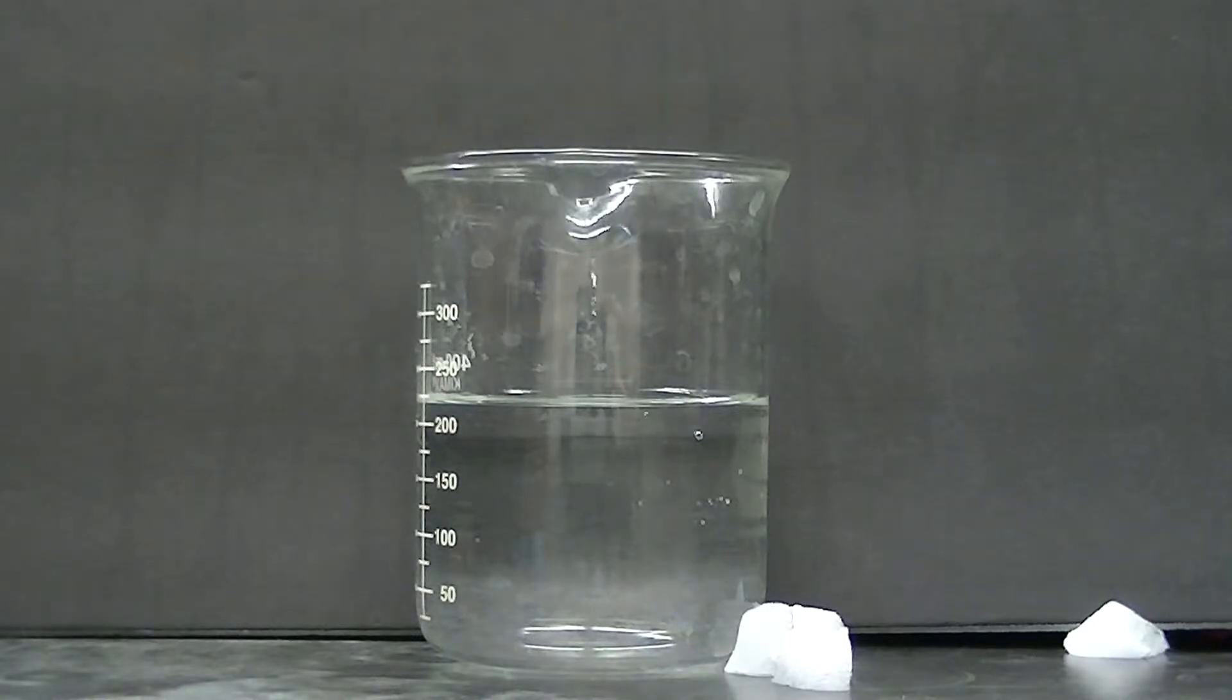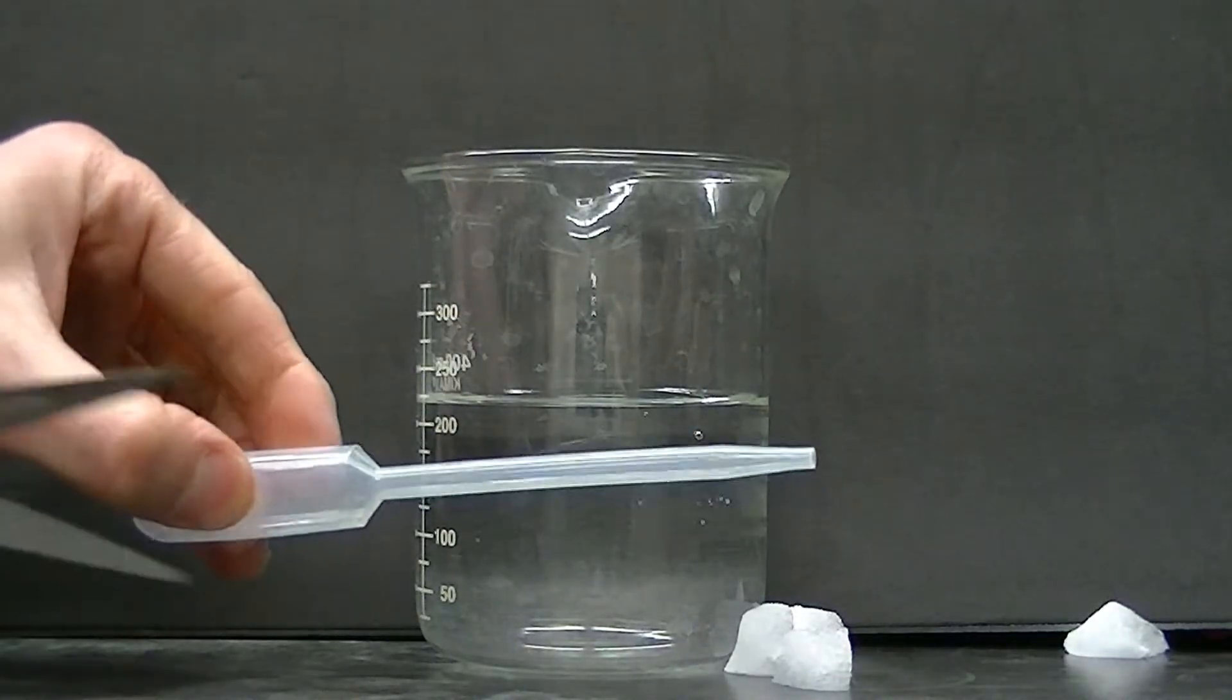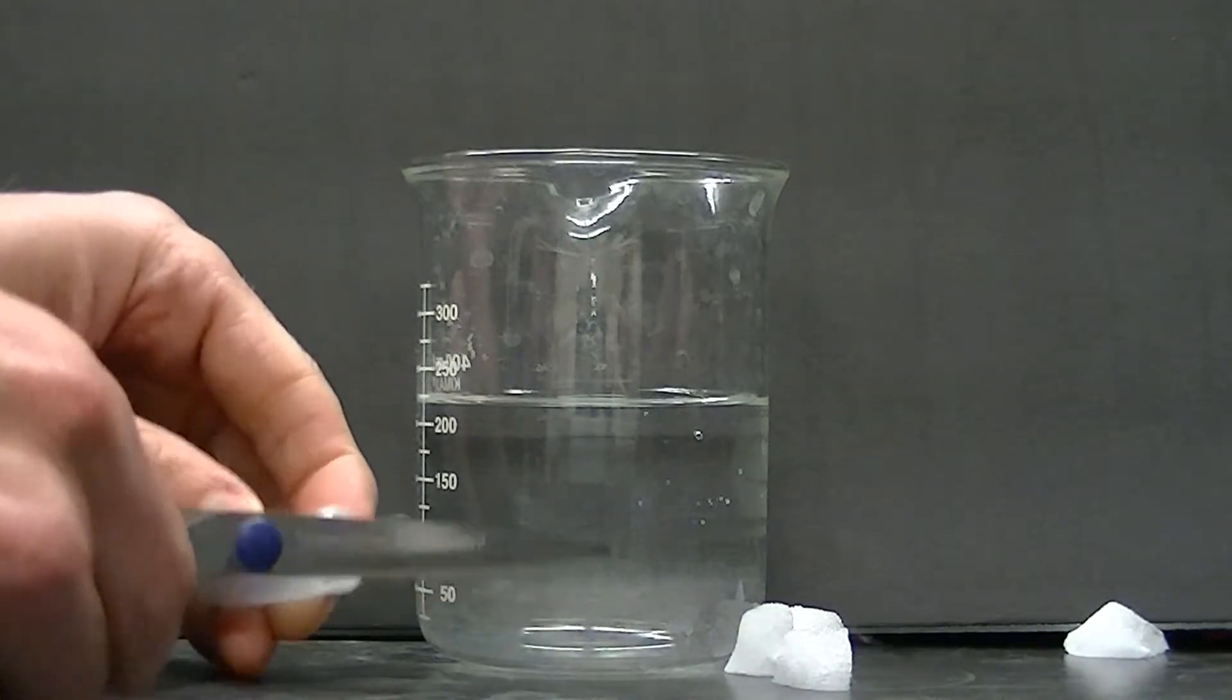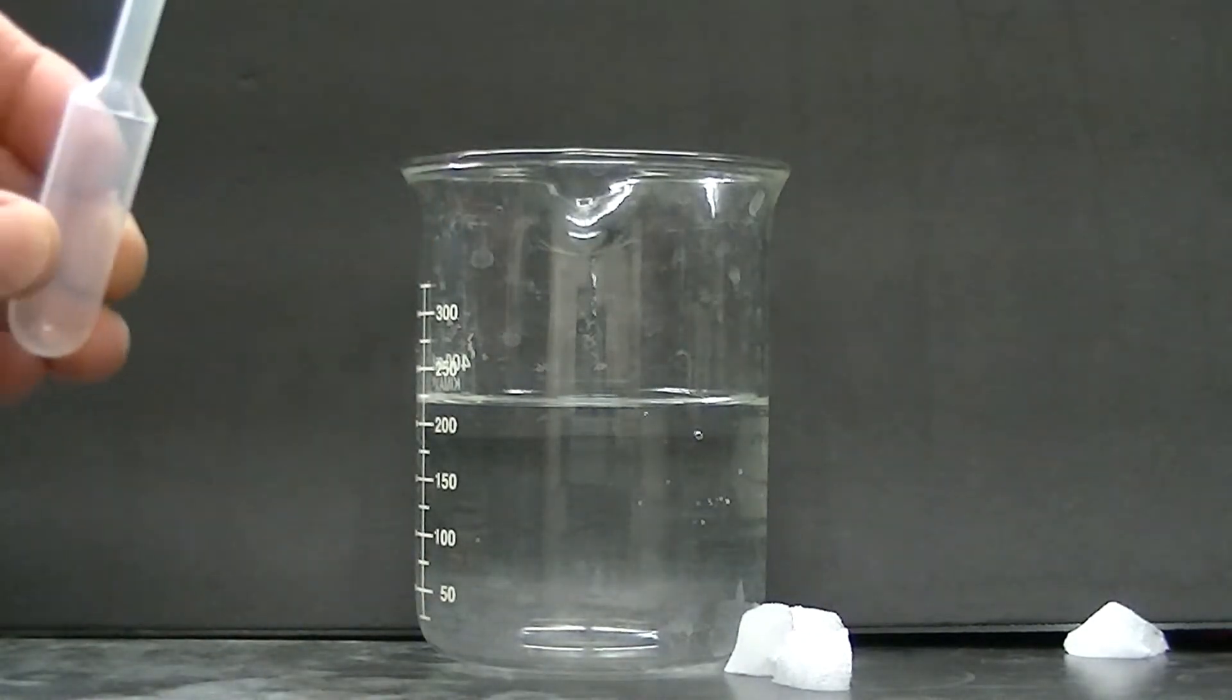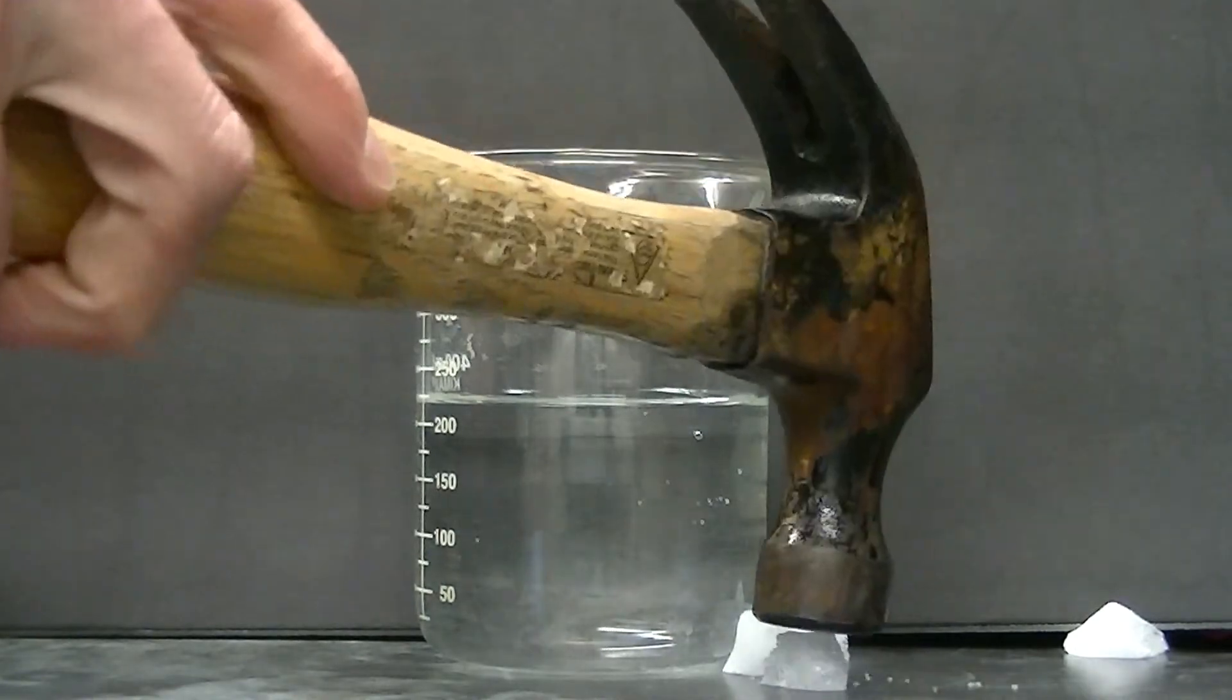We're going to try to melt some carbon dioxide, some solid carbon dioxide. I'm going to take a disposable pipette, cut off the top, take some dry ice, solid carbon dioxide.